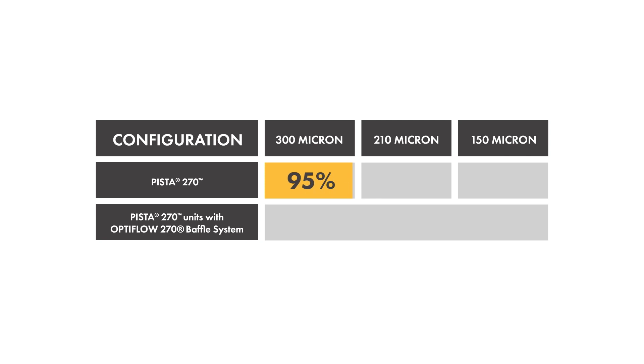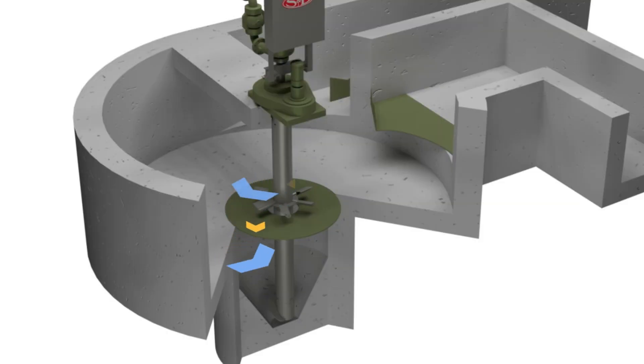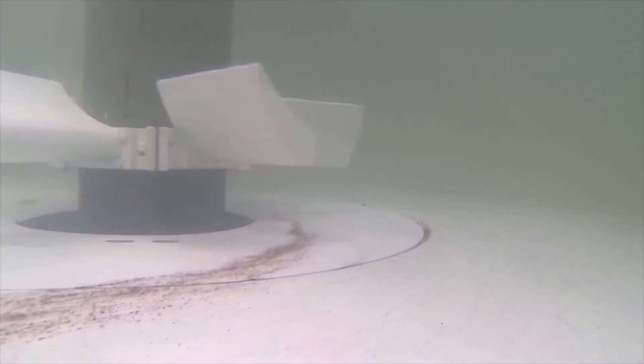The OptiFlow baffle creates a forced vortex that allows 95% grit capture of 150 micron grit at all flows. The axial flow propellers sweep grit along the floor in a moving bed towards the hopper opening and also lift organics back into the flow to continue moving them to the next stage of treatment.